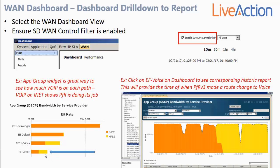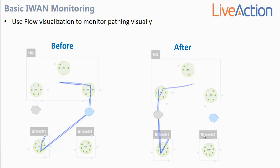If you were to drill down on the voice bar graph, that will open up the corresponding historic report, which will very quickly highlight when that route change occurred. Another key feature of LiveNX is the ability to visualize traffic across the topology diagram. You can see voice traffic riding the MPLS network before a PFR event, and afterwards see that the pathing of voice has taken an alternate INAT path. With this topology view, it makes it quick and easy to validate that pathing is performing as desired in the environment.